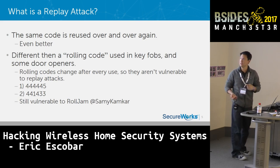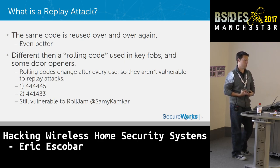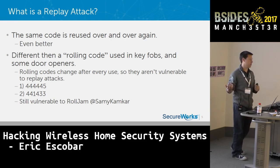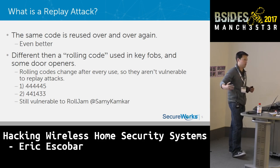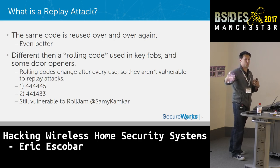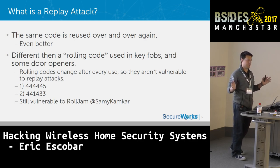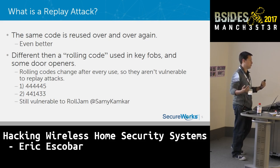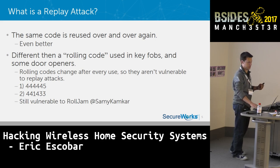These cheap sensors use the same code over and over again. Newer garage door openers and car clickers typically have rolling codes — each transmission sends a completely different code that rolls in a sequence that's hard to brute force because the next number is random. This prevents replay attacks. There's something called Roll Jam that Samy Kamkar came out with that exploits another aspect of rolling codes, but these systems aren't directly vulnerable to a basic replay attack.